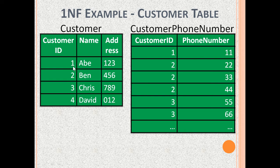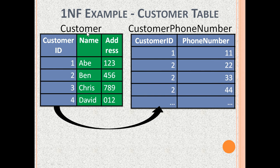For example, Abe has a customer ID of 1, and in the customer phone number table, customer ID 1 has only one row, which is the phone number for Abe. Ben has a customer ID of 2, and for customer ID 2 there are three rows with phone numbers 22, 33, and 44. The customer data is in the customer table and phone number data is in the customer phone number table. The customer table has customer ID as its primary key, and the customer phone number table has customer ID and phone number together as the primary key. In this design, no space is wasted, and if a phone number is deleted, the customer does not get deleted.